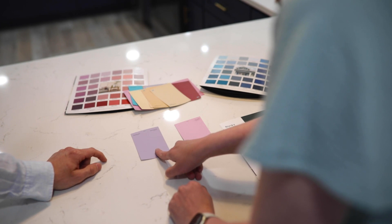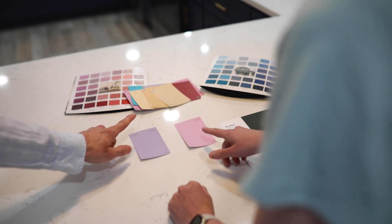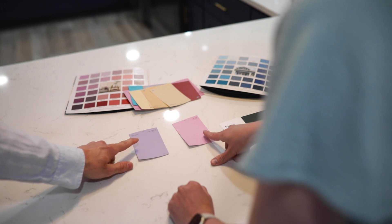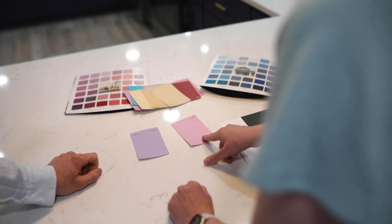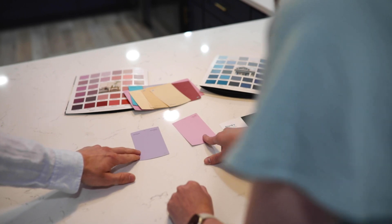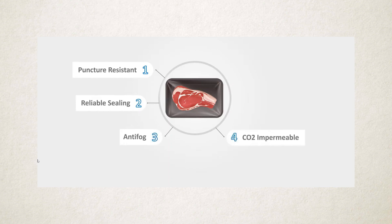Now let's see how we select the best packaging material, as it is essential to maintain the quality and safety of MAP foods. There are six main characteristics to consider: resistant to puncture, sealing ability, antifogging properties, carbon dioxide impermeability, oxygen impermeability, and low water transmission rate.